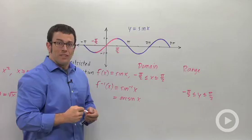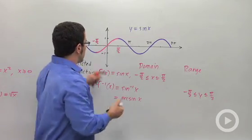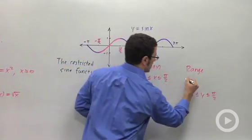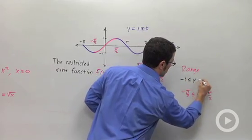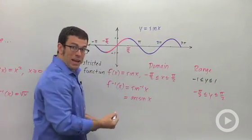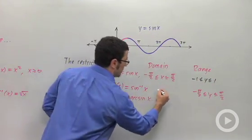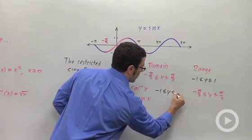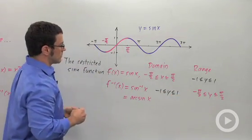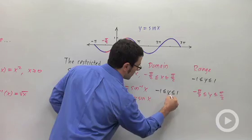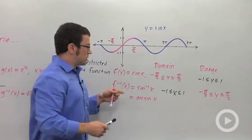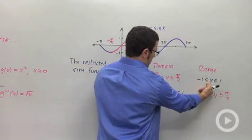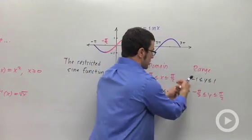The range of the sine function is between negative 1 and 1. The domain of the inverse sine function will be between negative 1 and 1. Sorry, that's domain. So whenever you invert a function, the range and domain switch.